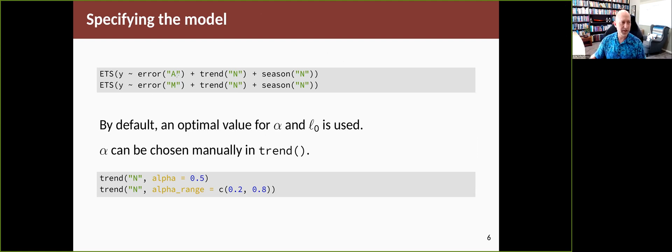To fit these two, we simply change the error part of the model specification to be either an A or an M. The other parts are the same. And when it goes and fits the model, it'll optimally choose alpha and L0. And it'll choose it differently depending on which of the two, because it's going to be a different likelihood function. You can override the choice, at least of alpha, by specifying it inside the trend part of the model. You can give it a specific value like alpha equals 0.5 or you can give it a range, and it'll choose the optimal value within that range.